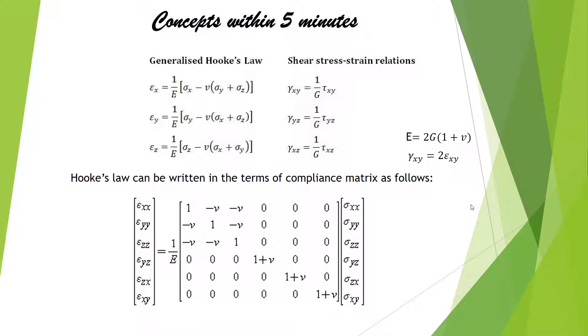If you put all these equations into a matrix form, you can actually get this compliance matrix. This is the 6 by 6 matrix, the compliance matrix. If you consider the first row of this matrix, you can see 1 by E into epsilon xx minus mu epsilon yy minus mu epsilon zz. The other terms are 0. So you will get the first component of the left hand side.